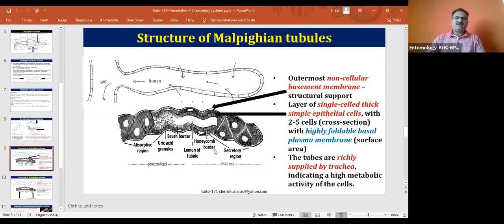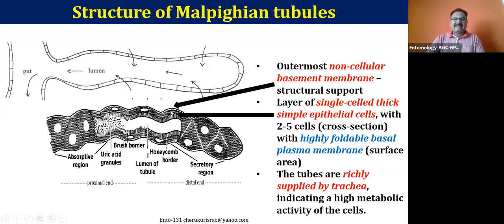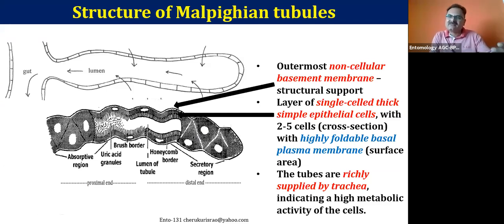Looking at the structure of the Malpighian tubules: the outside is a non-cellular basement membrane, which is then inside with single-cell thick epithelial cells. In cross-section you will see at least two to five epithelial cells. The inside plasma membrane is highly folded to provide as much surface area as possible for absorption and secretion. These Malpighian tubules are richly supplied with the tracheal system, so that oxygen supply is given to each individual cell, indicating there is a lot of metabolic activity in these cells.